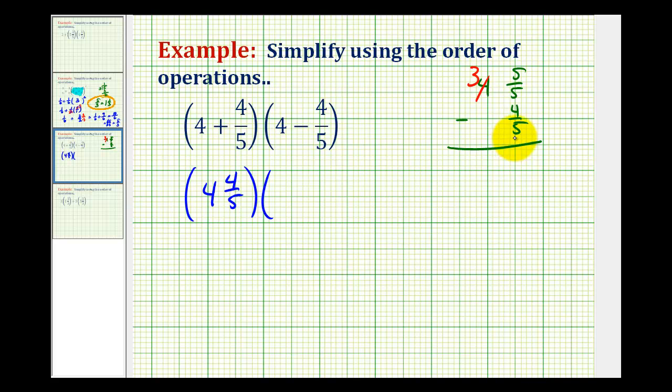And now we can go ahead and subtract 5 fifths minus 4 fifths is 1 fifth, and then we still have the 3. So 4 minus 4 fifths is equal to 3 and 1 fifth.